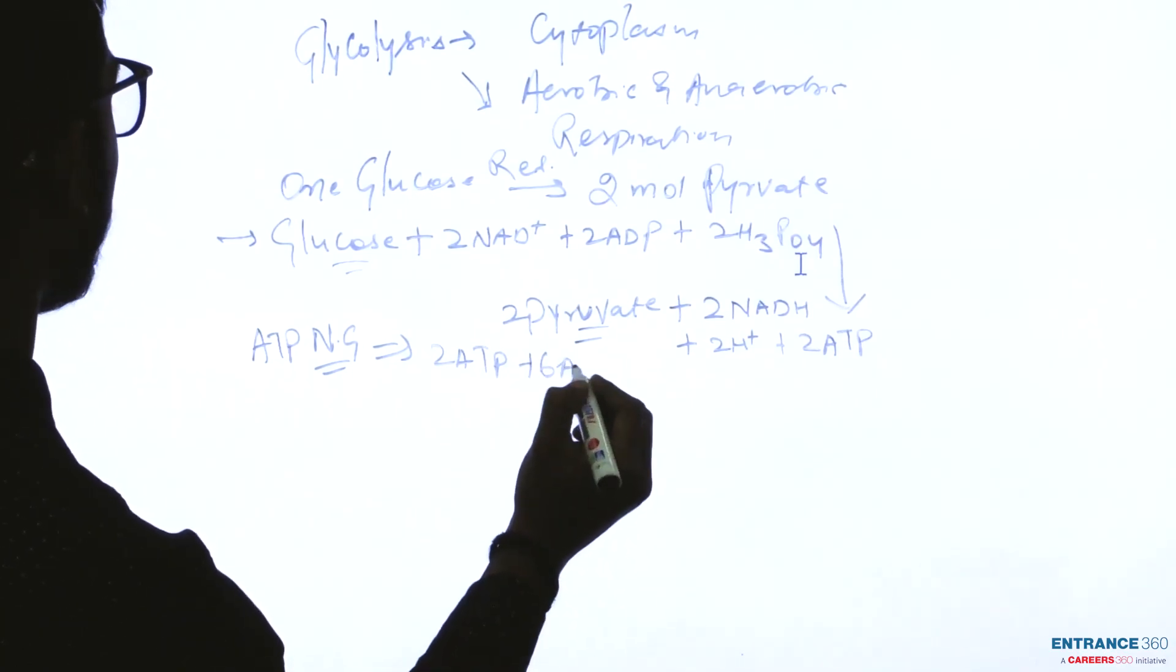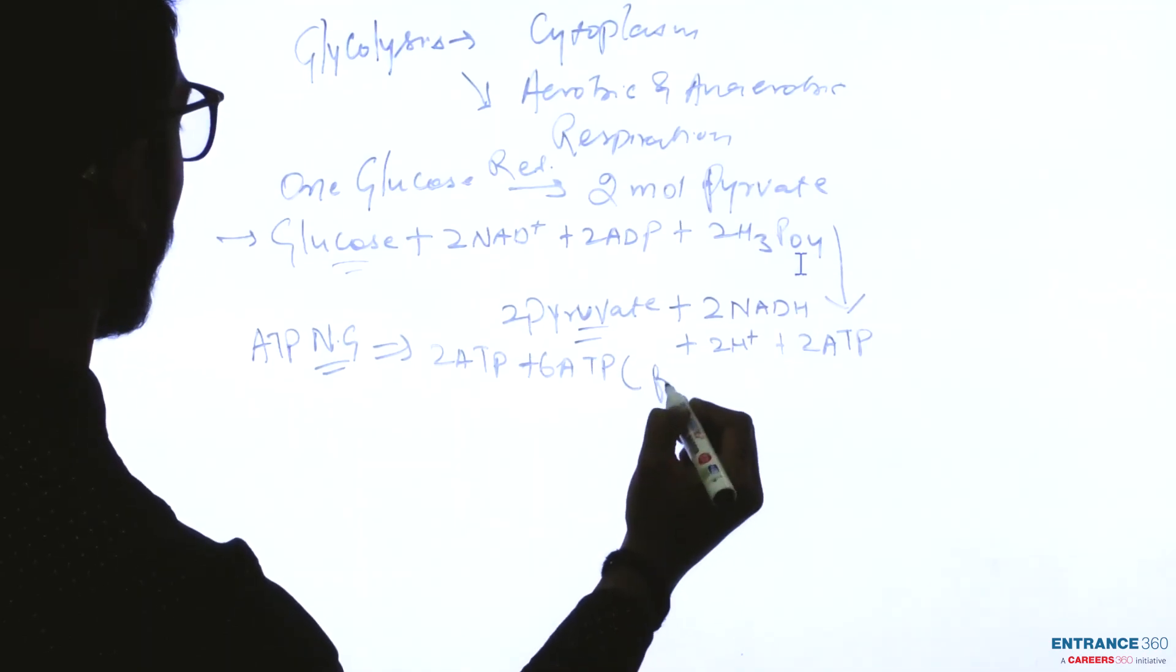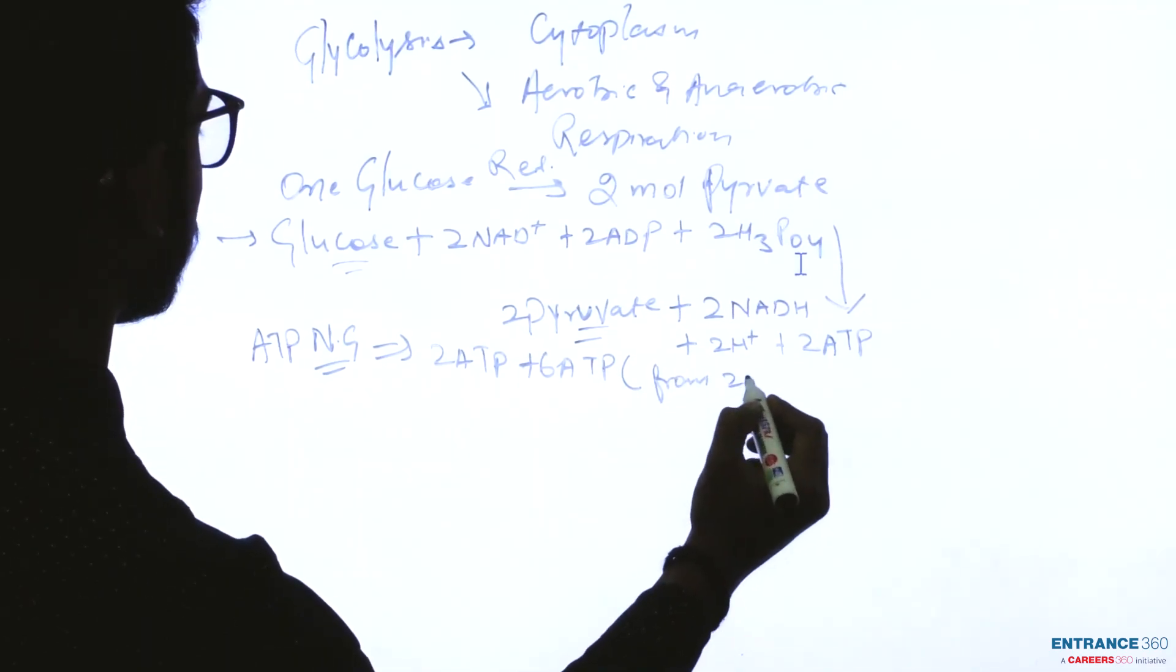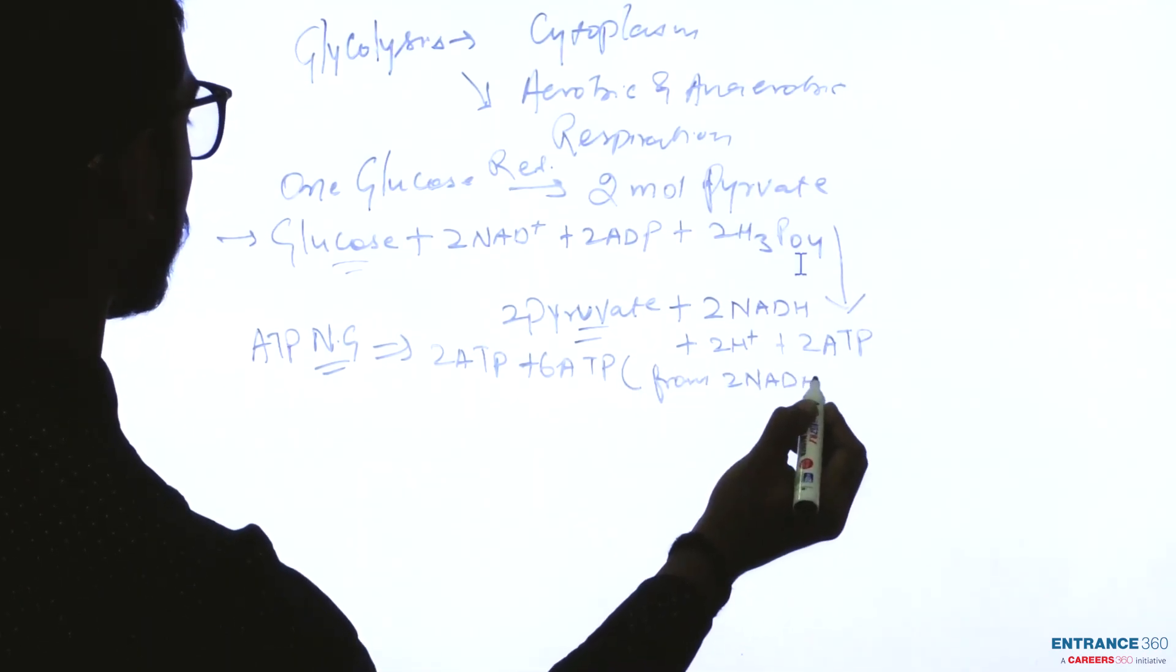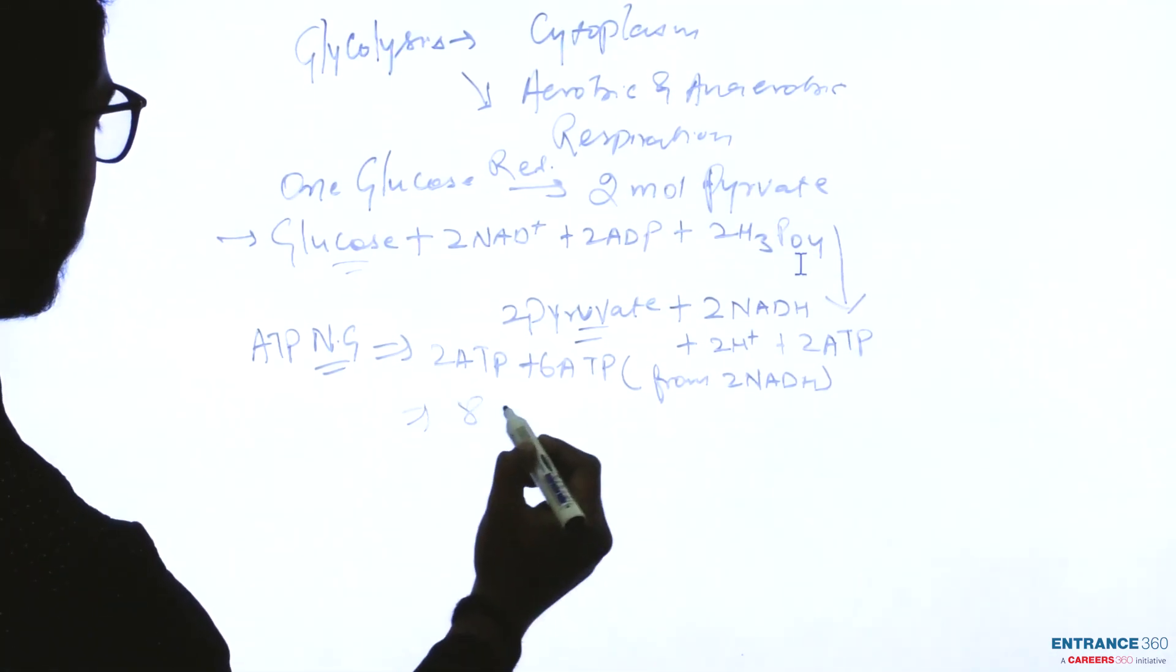Plus 6 ATP will come from 2 NADH. The total net gain will be 8 ATP.